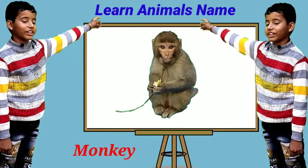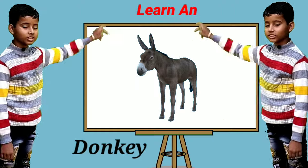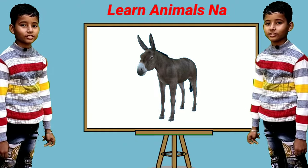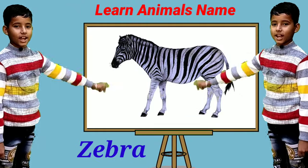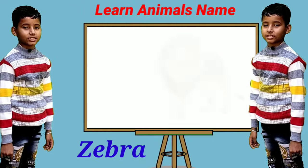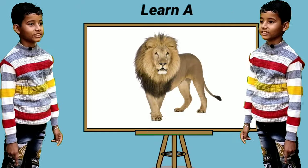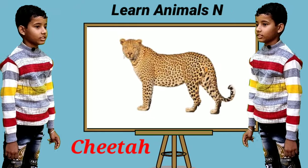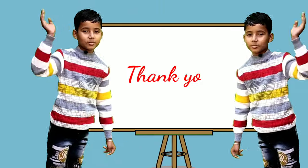This is a monkey. This is a donkey. This is a zebra. This is a lion. This is a cheetah. Thank you, bye-bye.